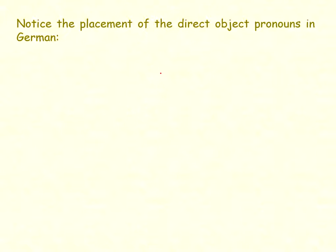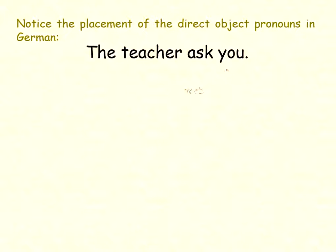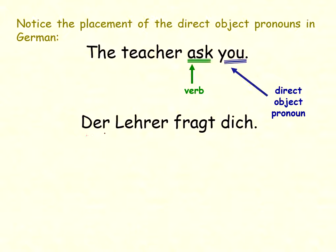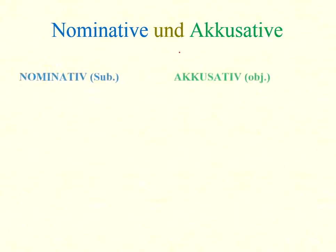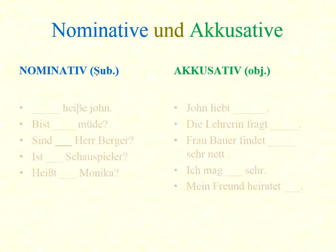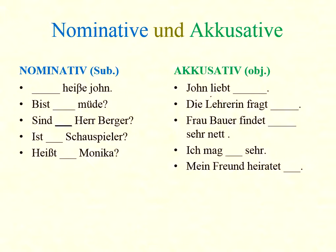Let's use them and try some examples. Notice the placement of the direct object pronoun in German and where we place them. For example, 'The teacher asks you' — English has subject, verb, direct object. In German, they have a verb followed by the direct object pronoun 'dich' after the verb. So 'du' as nominative changes to 'dich' as accusative.